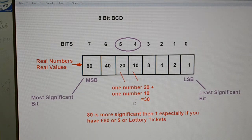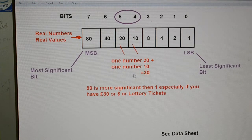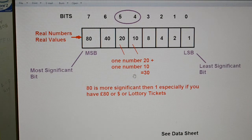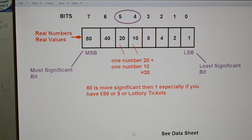What does that mean? Well, you can see that right on my screen. You've got 80. 80 is more significant than 1. Especially if you have 80 pounds or dollars or 80 lottery tickets. That's quite significant.